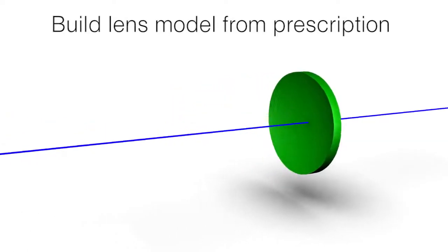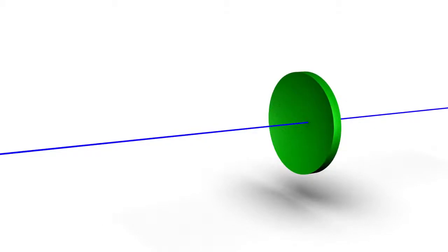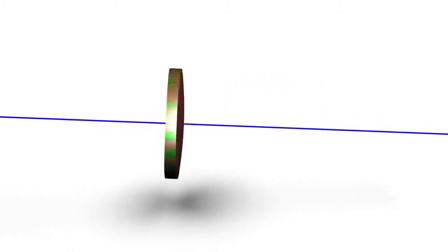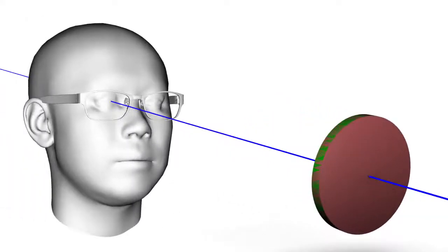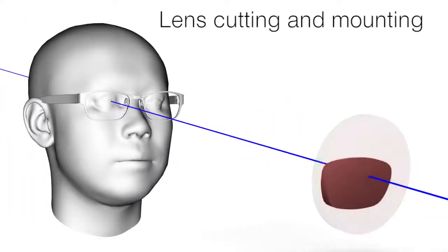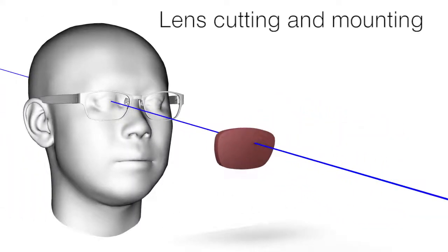We then create a parametric lens model based on the user's prescription. Lenses are aligned with the user's eye center based on the optical axis. We trim the lenses and mount them into the eyeglasses frame.